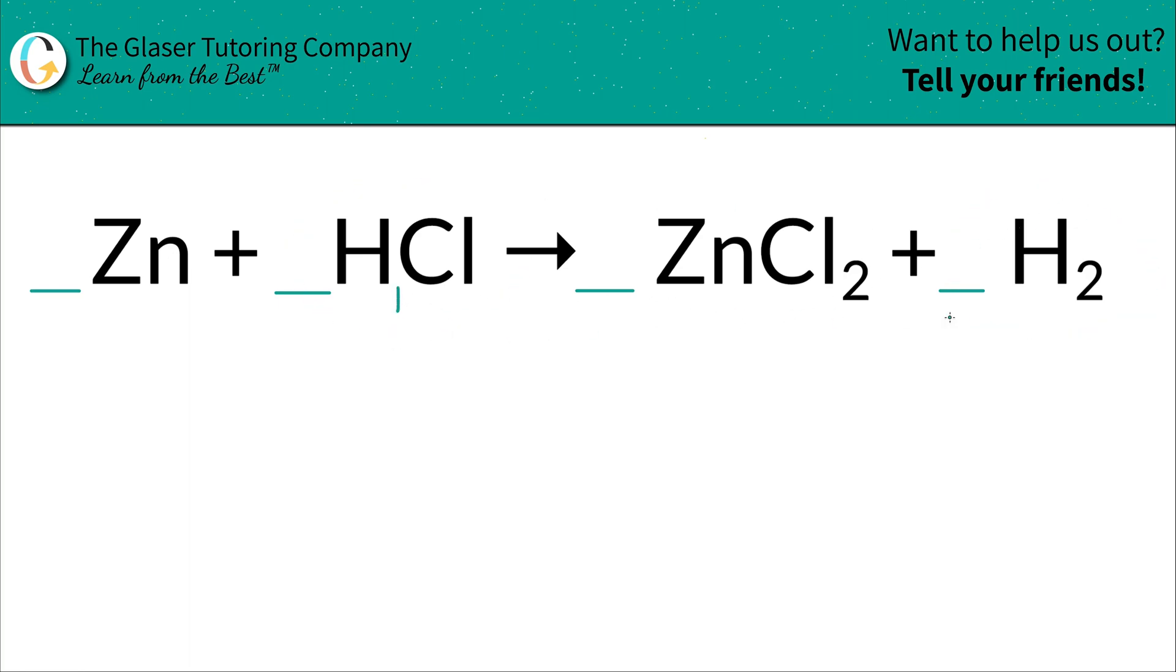There's one hydrogen on the left. There's two hydrogen on the right. So you want to always place a coefficient on the lower side. And you have to think multiplicatively. In other words, if I place a two here, two times one will then equal two. So now I have two hydrogens on the left, and I have two hydrogens on the right. So that is now balanced.